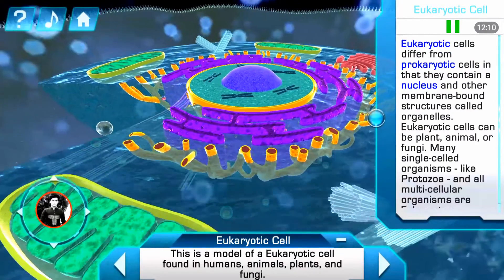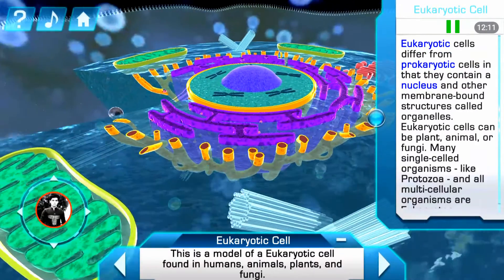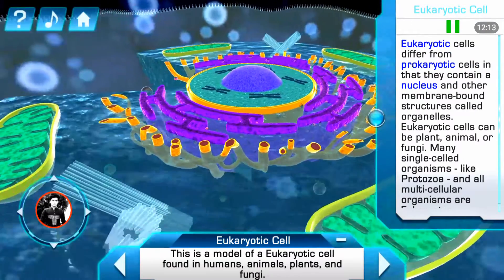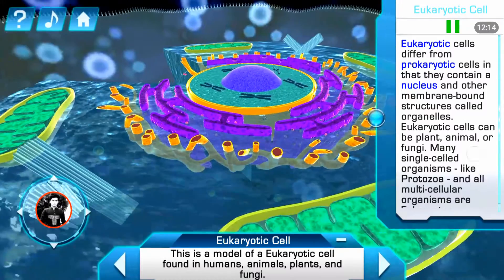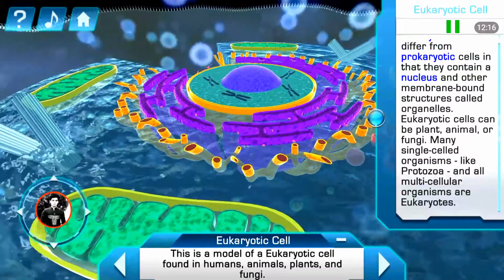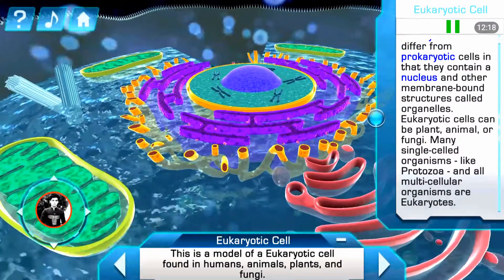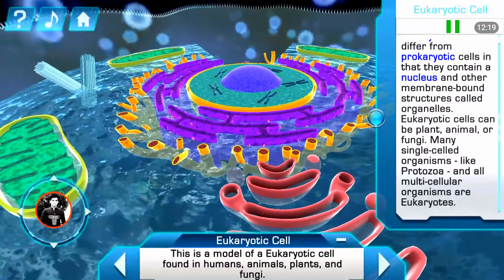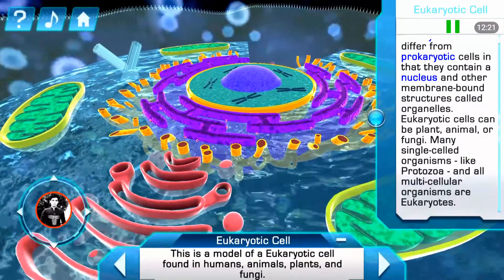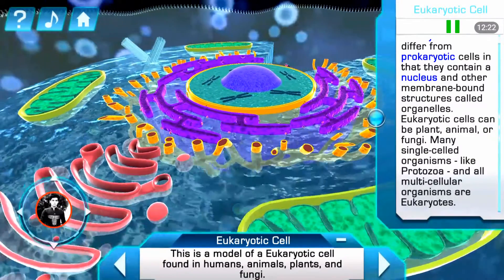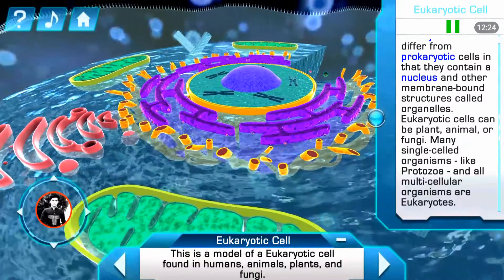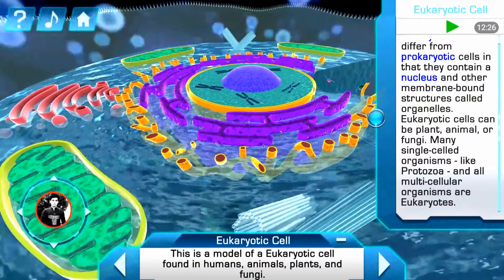Eukaryotic cells are defined by the fact that they contain a nucleus and other membrane-bound structures called organelles. Eukaryotic cells can be plant, animal, or fungi. Many single-celled organisms like protozoa, and all multicellular organisms, are eukaryotes.